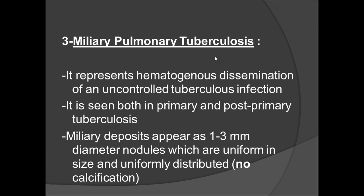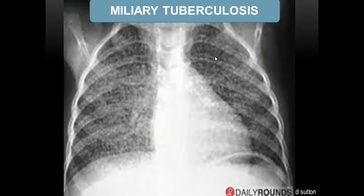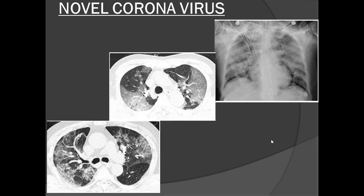Miliary pulmonary tuberculosis represents hematogenous dissemination of uncontrolled TB infection, occurring in both primary and post-primary disease. It appears as 1–2 mm randomly scattered nodules with no zonal predilection and no calcification. The classic appearance shows very fine nodularity randomly scattered throughout both lung fields, with no zone spared.